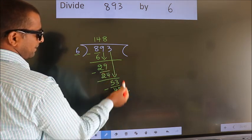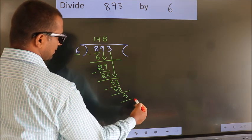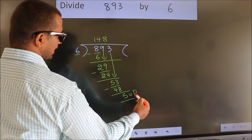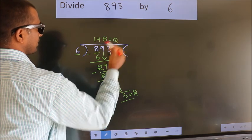No more numbers to bring down. So we stop here. This is our remainder. This is our quotient.